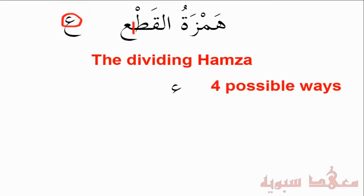Hamzatul Qat'a can be written in four possible ways. In all four possible ways there will always be the Hamza, but how it's written changes. Now let's look at some words that have Hamzatul Qat'a.